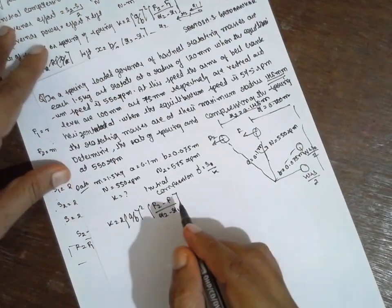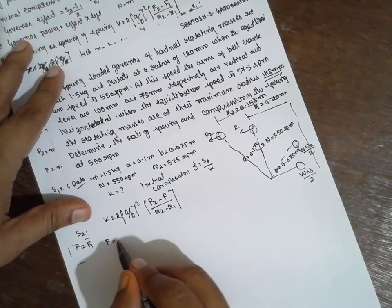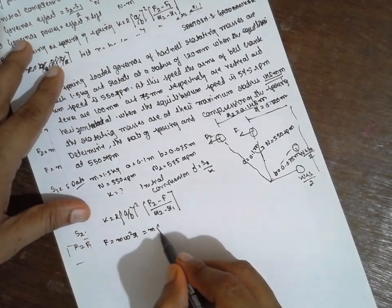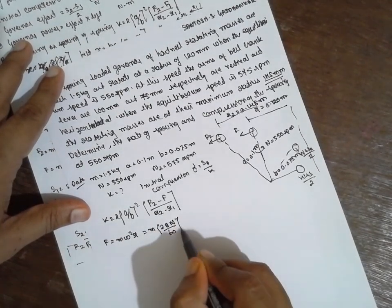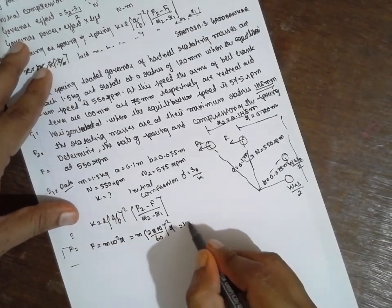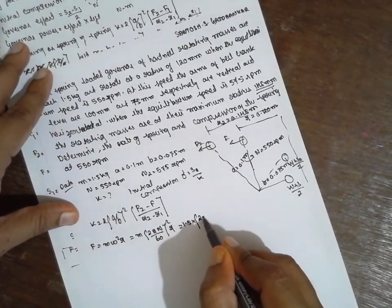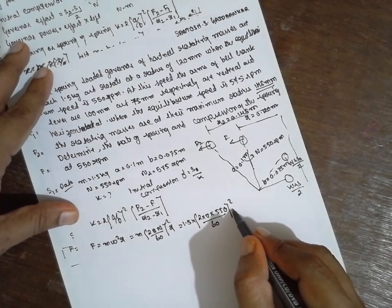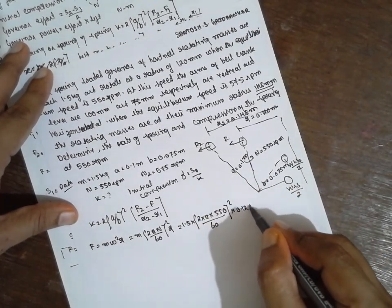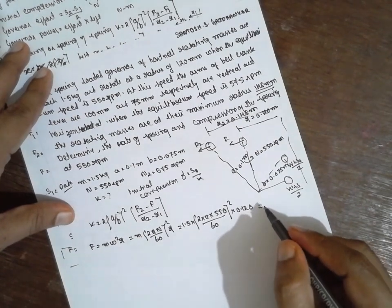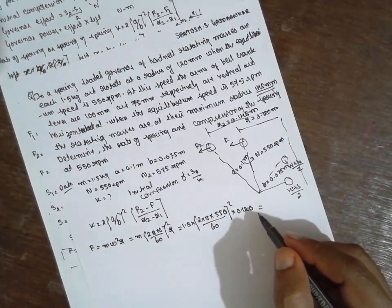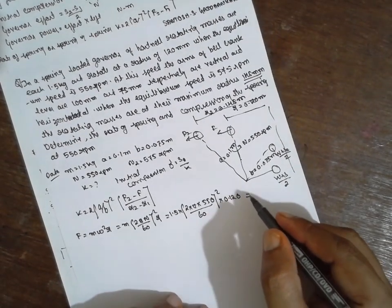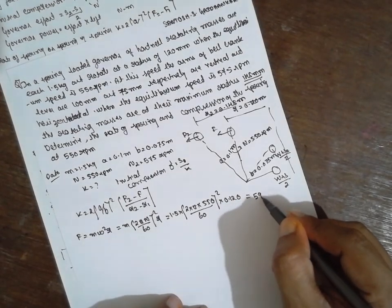Now, what is F? F is nothing but M·ω²·R, where ω equals 2πN divided by 60. So F equals 1.5 into (2π into 550 divided by 60) whole squared into R, where R is 0.120 meter. The answer for F is 597.11 N.